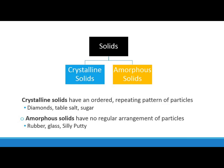Solids can be classified as either crystalline or amorphous. Crystalline solids have a nice, ordered, repeating pattern of particles — like diamond, table salt, or sugar crystals. Amorphous solids have no regular arrangement of particles; they're often not quite fully solid. Think of silly putty, which flows a little and is almost like a liquid. Rubber and glass are also examples of amorphous solids.